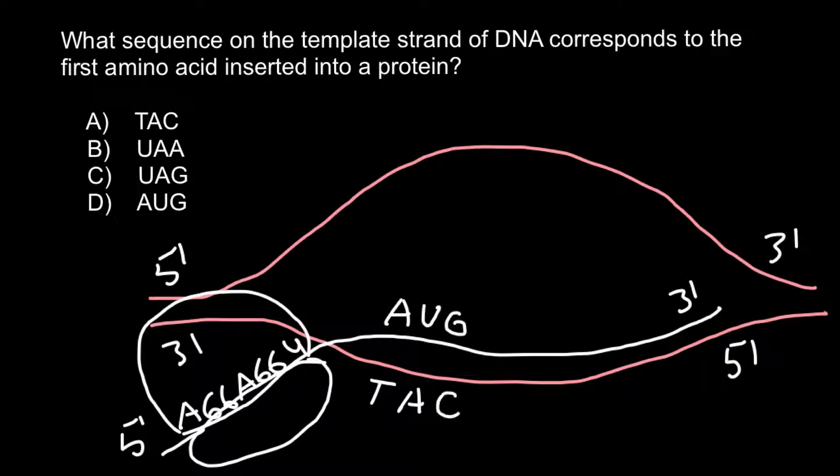On the coding strand of the DNA, we would have almost the same sequence. As you see, the only difference would be that instead of uracil, on the coding strand we would have thymine. All the rest of the sequence would be the same. That's why we call this the coding strand, because the code of the messenger RNA would be the same as on the coding strand of the DNA.